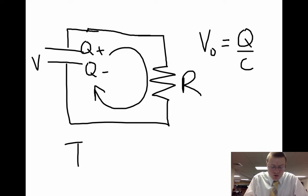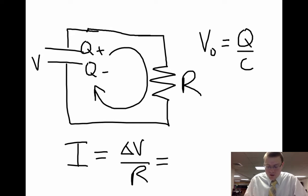So if I wanted to solve for the current right off the bat, I know that current is voltage over resistance, and the voltage is provided by the capacitor, which is Q over C, divided by the resistance.